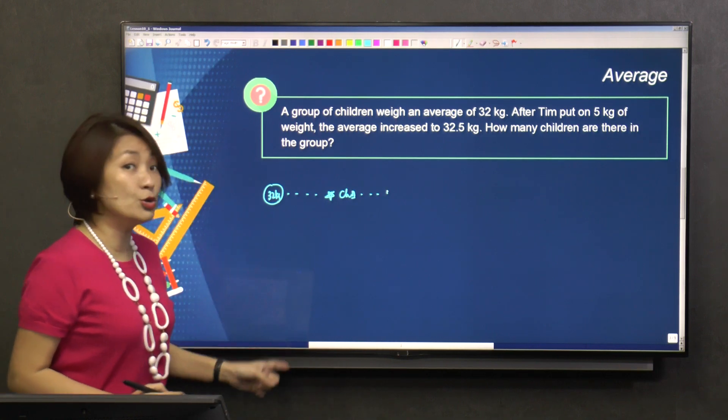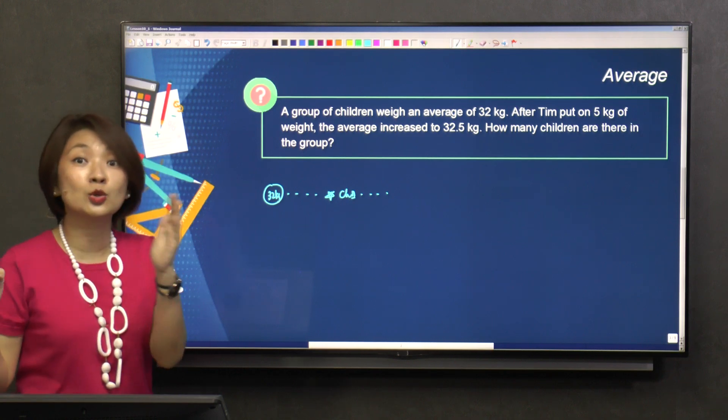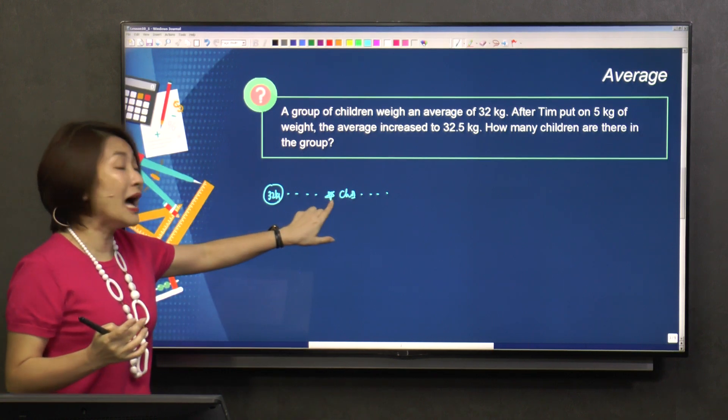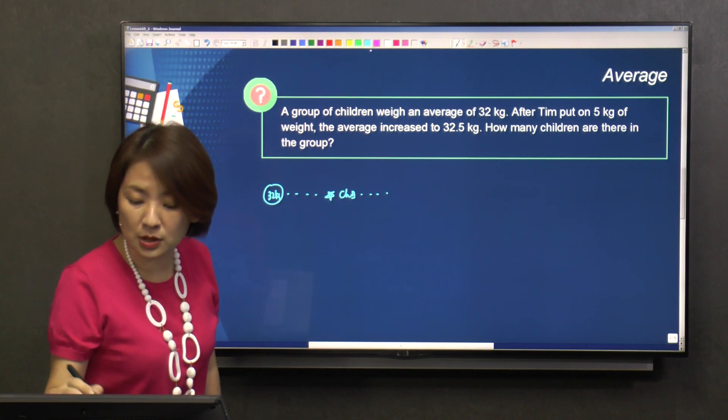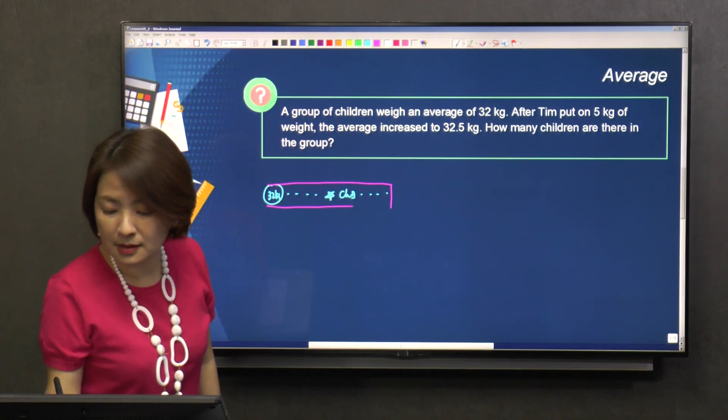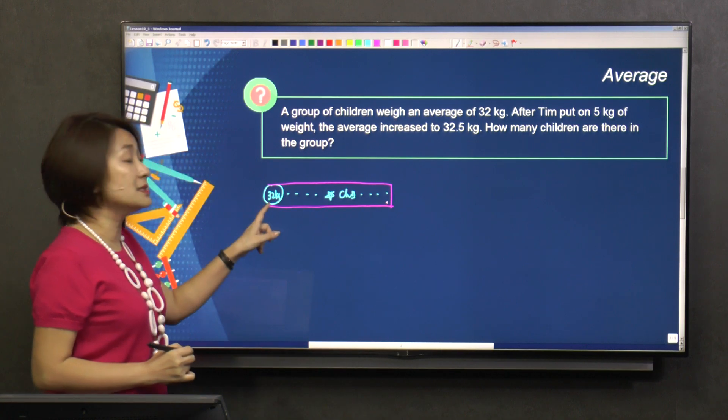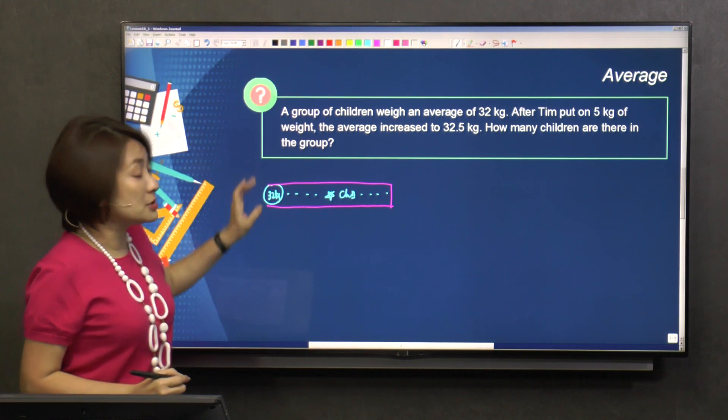I told you earlier that whenever you have the average, you know the total. I do not know how many children there are, but in model drawing I actually know that the total is this. I know that this is the total. And then, for now, just this part here.